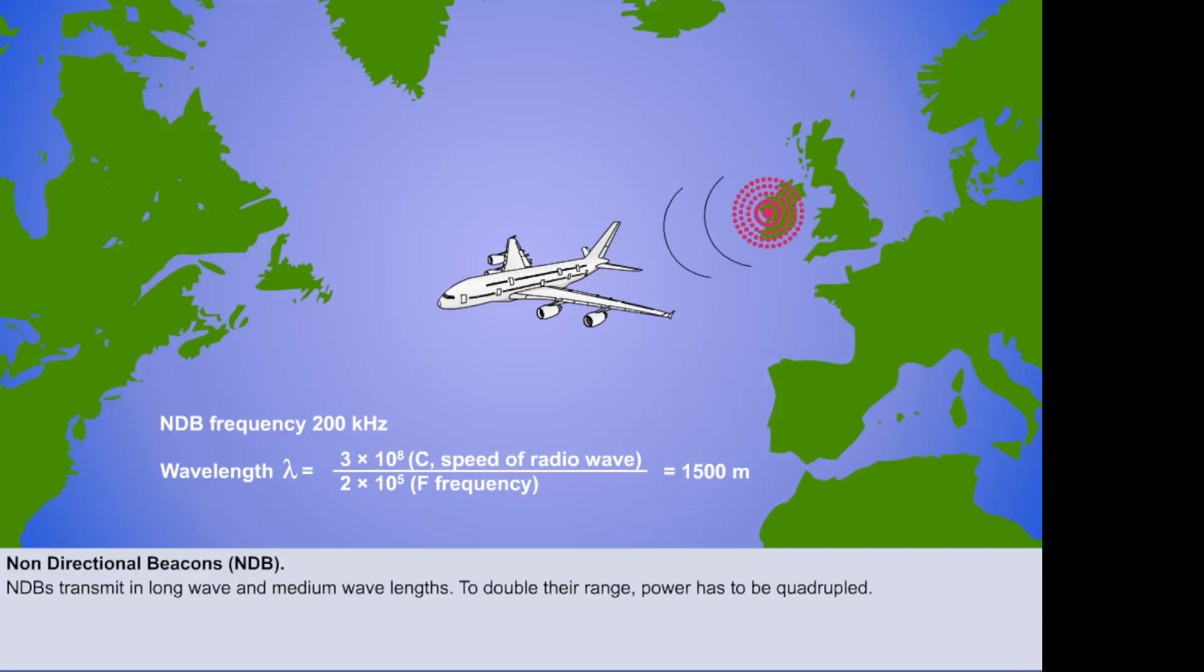NDBs transmit in the medium and long wave, and so their wavelengths can be very long, which makes them suitable as long distance navigation aids. Over the sea, they can have a range of 500 miles or more, using 10 kilowatts of power.